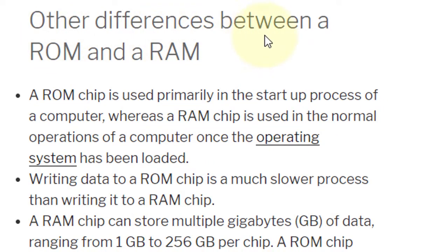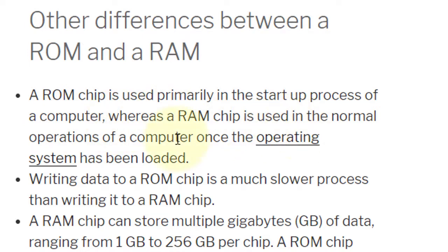Another difference between ROM and RAM: a ROM chip is used primarily in the startup process of a computer, whereas a RAM chip is used in the normal operation of a computer once the operating system has been loaded.